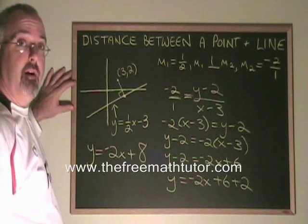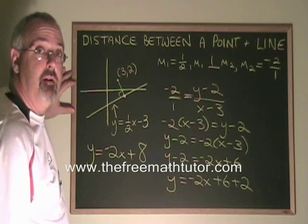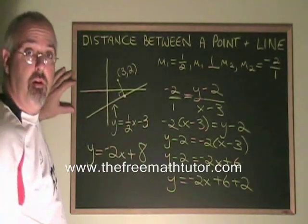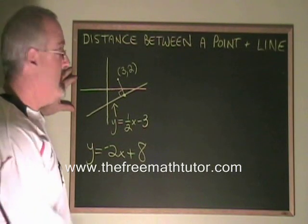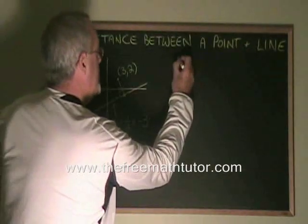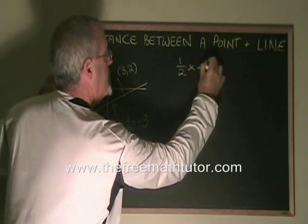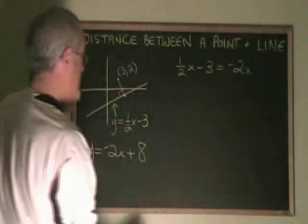We're nearly there. Now that we know the equations of both lines, we can use comparison to find the point at which they cross, which is the point that we've been looking for this whole time. Doing comparison with these two equations, I get half x minus 3 equals negative 2x plus 8.